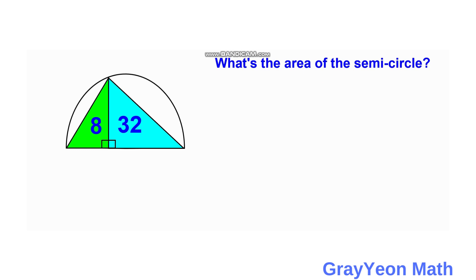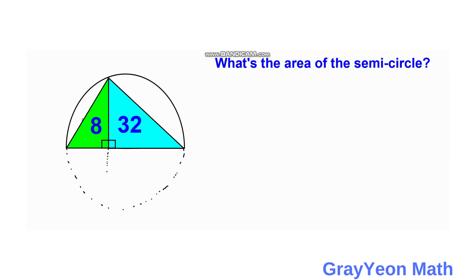The first thing we have to do is draw this circle as a whole. We also draw a line from this point downwards, and this length is the same as the other side. So if we label this as h, then this is also h.